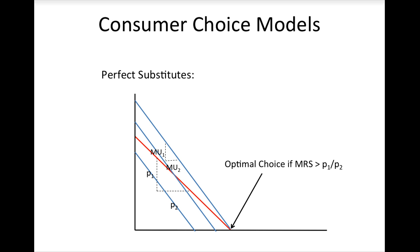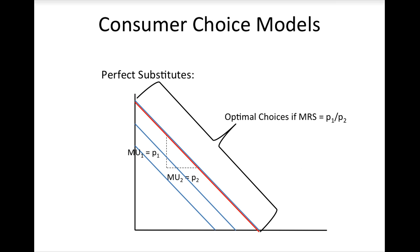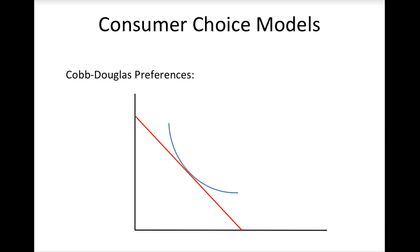At the bottom of the indifference curve if the indifference curve is steeper than the budget line, or any point on the indifference curve if the budget line and the indifference curve have the same slope. Finally, we studied models with standard or Cobb-Douglas preferences, where the optimal choice is at a tangency point between the indifference curve and the budget line.